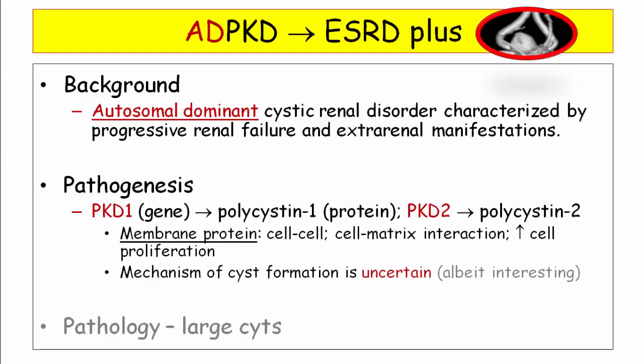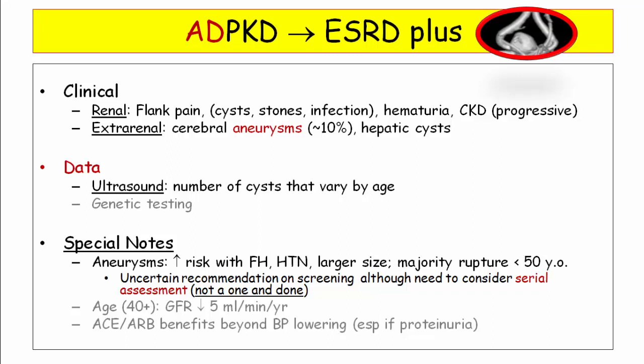Here is a summary slide of what we've previously discussed, covering clinical presentation including both renal and extra-renal manifestations. The diagnosis depends on demonstration of multiple and/or bilateral renal cysts, the number of which vary by age. If the diagnosis is uncertain, genetic testing can be pursued. Once the GFR begins to drop, the rate of progression is approximately 5 mLs per minute per year. ACE inhibitors do confer some clinical benefits in this patient population above and beyond blood pressure lowering alone.